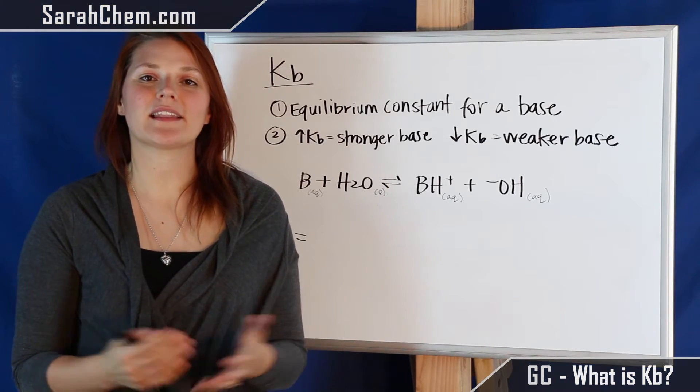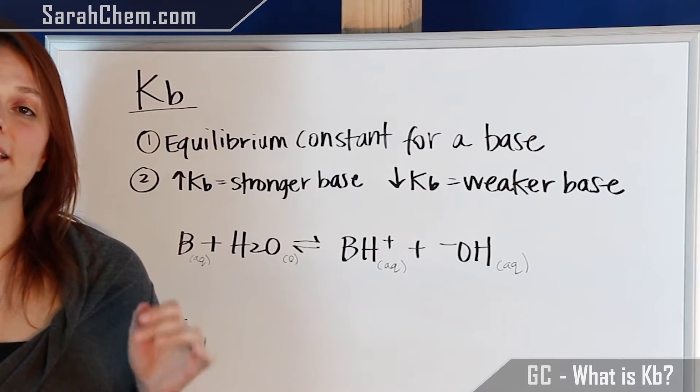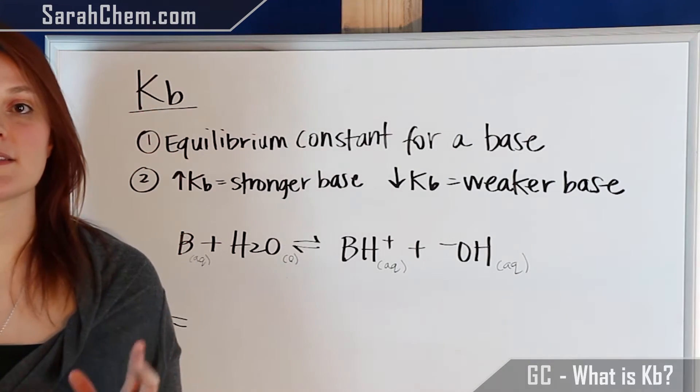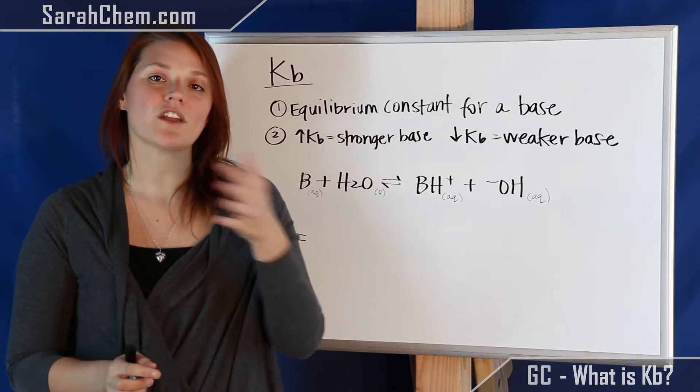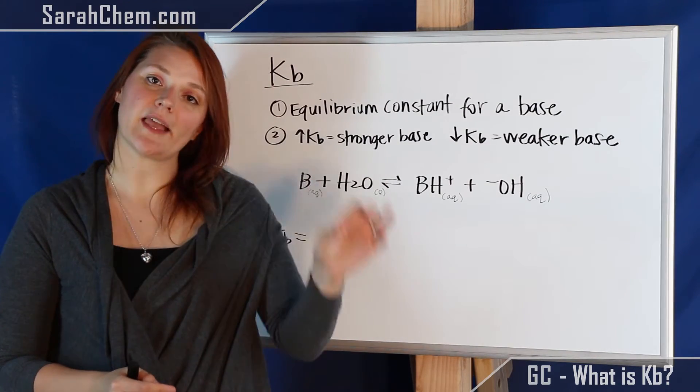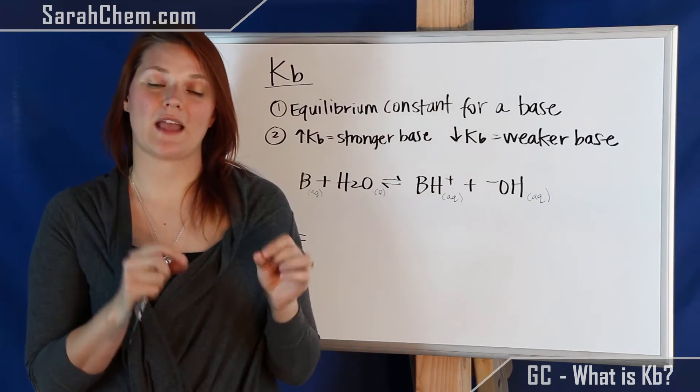Hi everyone! In this video I'd like to talk about a few characteristics of Kb. So the first one is that Kb is the equilibrium constant for a base, something like ammonia or methyl amine, one of our weaker bases. They'll have Kb and Kb will tell us something about where equilibrium lies for that particular base reaction.